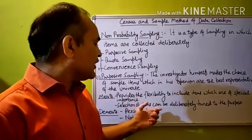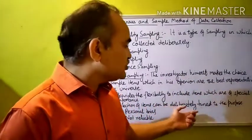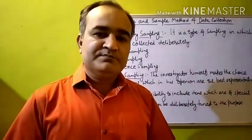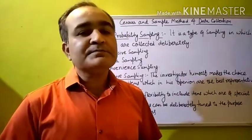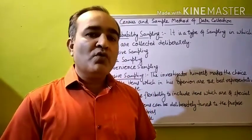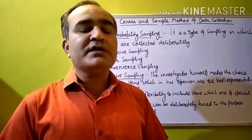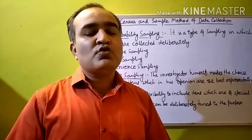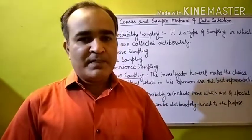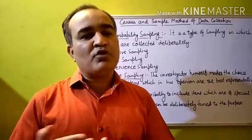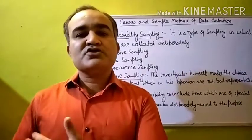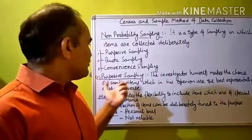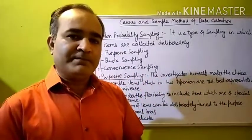The second merit is that selection of items can be deliberately tuned to the purpose of investigation. The investigator can tune the sample selection according to his purpose or according to the subject of his survey. This freedom to tune sampling to the subject of the survey is available in purposive sampling.